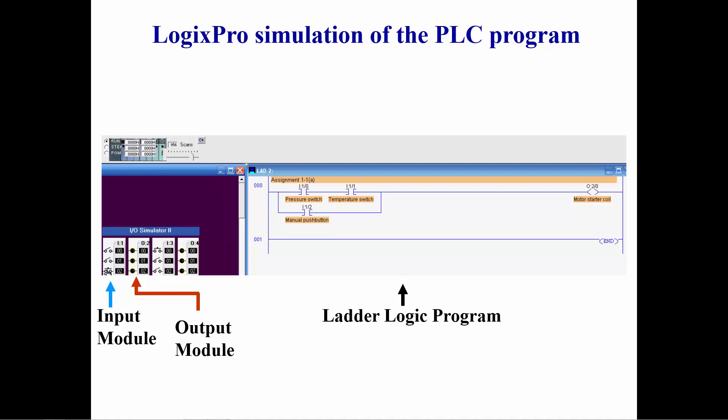When we close the input switch for I colon 1 slash 2 simulating a manual push button, the motor starter coil output is immediately turned on. The motor starter coil is on when the pressure switch and the temperature switch are closed, or when the manual push button is pushed.